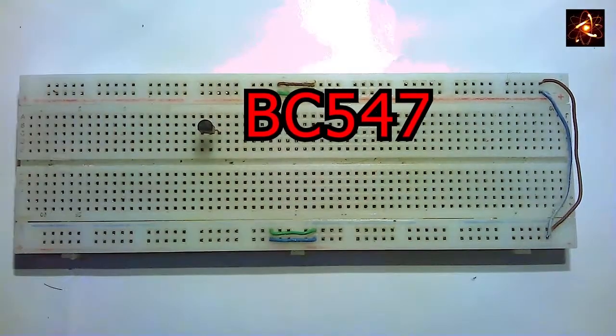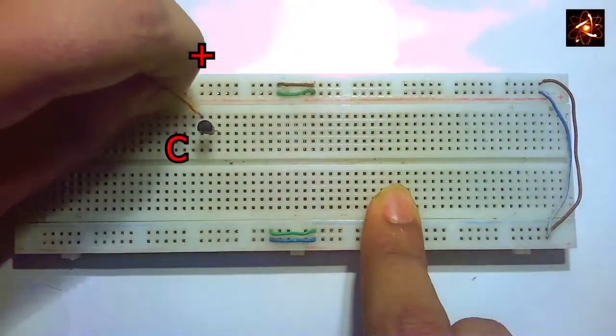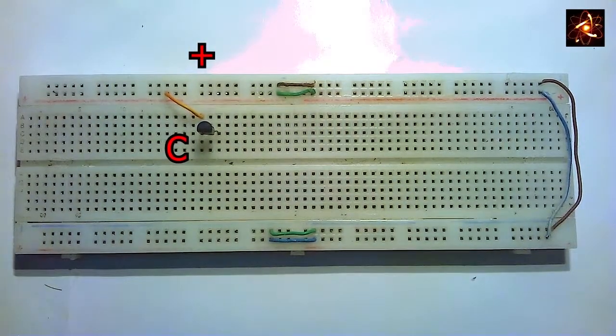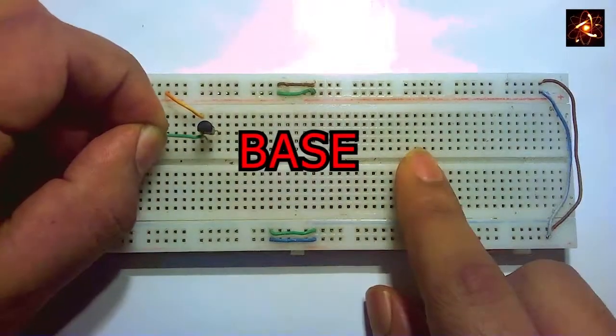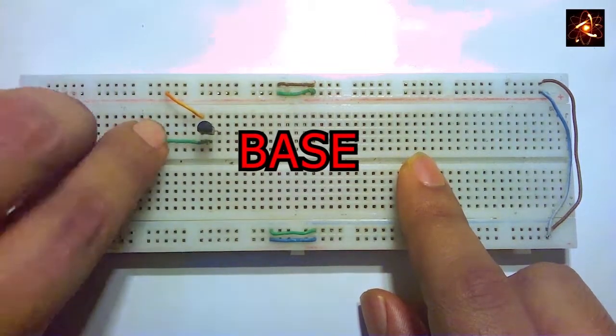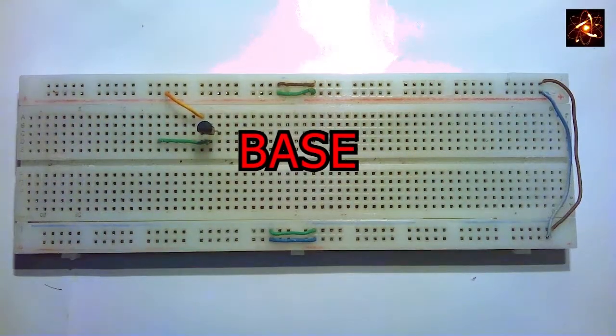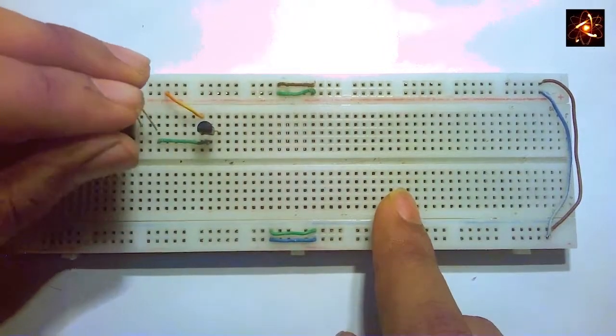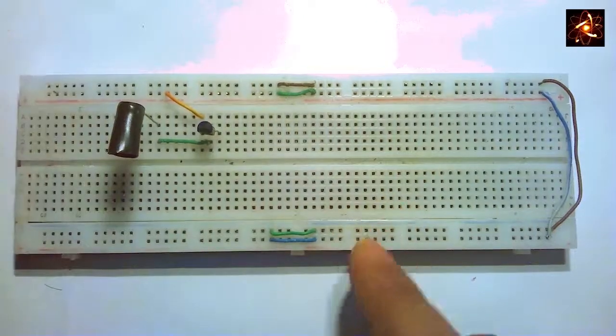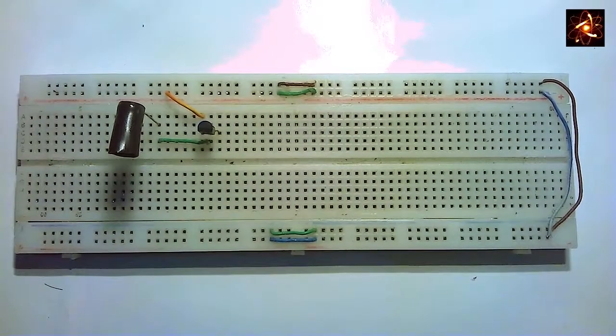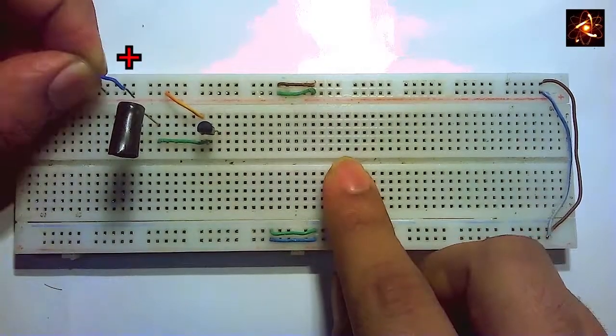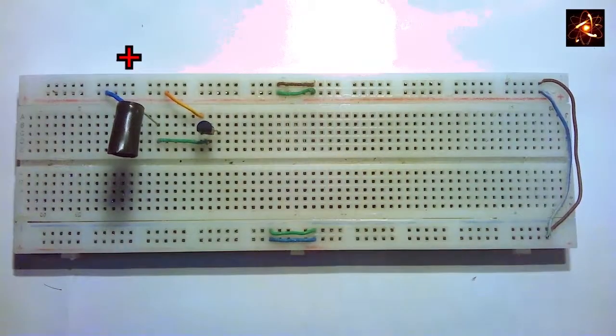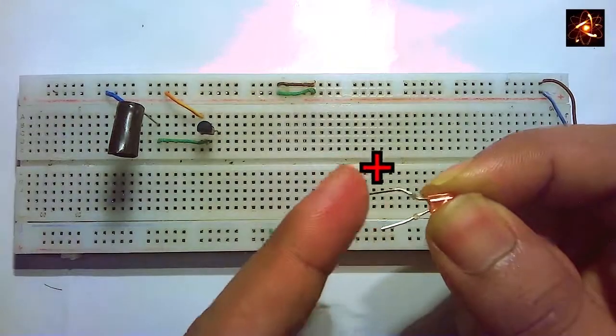Connect the transistor in the breadboard. The collector pin of the transistor is connecting in the positive rail. The base pin of the transistor is connected with a wire, and the opposite side of the wire is connected with the negative part of the IR receiver. The positive part of the IR receiver is connecting in the positive rail of the breadboard.